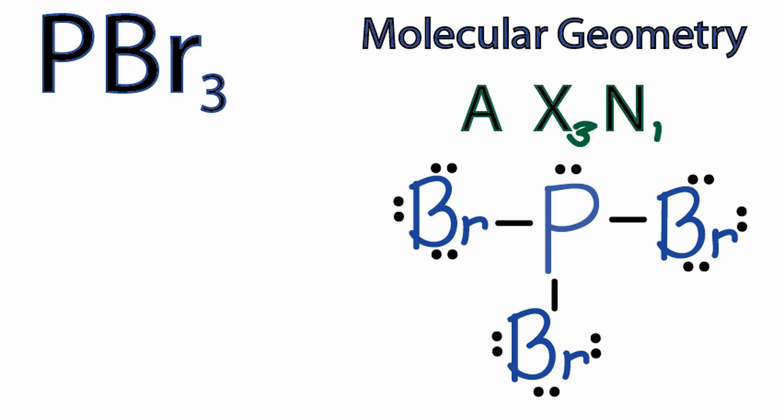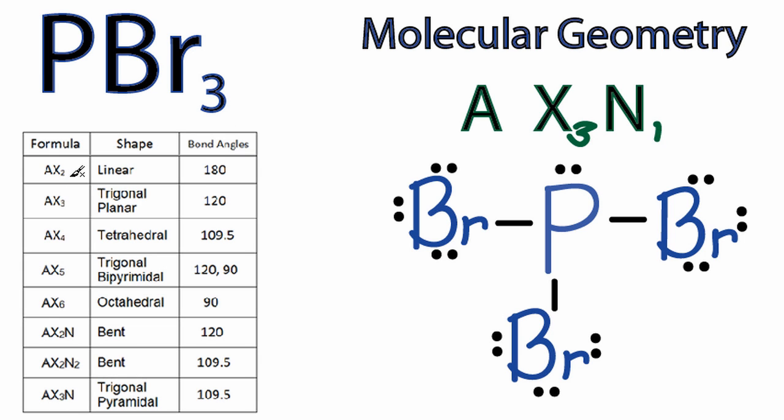So that gives us AX3N. We can look that up on a table. And we see we have AX2, AX3, all the way down to AX2N, AX2N2. And here we have AX3N. And that's what we're looking at here with PBr3.